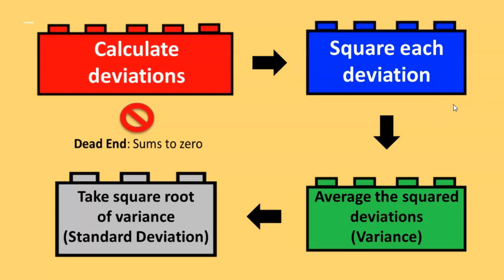This completes one part of the definition of standard deviation: calculating the deviation scores. Now we can continue with the rest of the definition of standard deviation and take the average of the squared deviation scores, which is this green lego here. This means we sum the squared deviations and then divide by the total number of scores. This is actually called variance, which is the average squared deviation scores, or the mean squared deviation. Now remember that we want standard deviation, or mean deviation. To get rid of the squared number, we take one step further and square root it. Since variance is the mean squared deviation, we square root the variance to get standard deviation, which is our gray lego here.